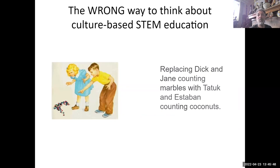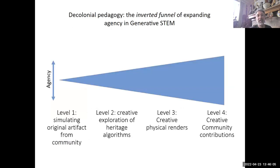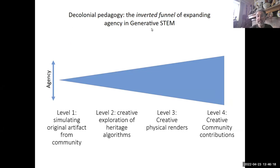So we have lots of examples of the wrong way to teach STEM education with culture. The funnel lesson plan starts with wonderful discussion but tries to reduce everything down to one math problem, which creates difficulties. If you want to decolonize that pedagogy, you need an inverted funnel — you need expanded agency, not diminishing agency.